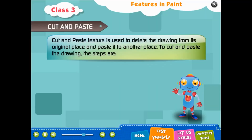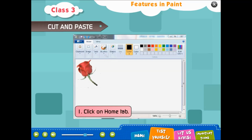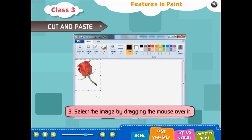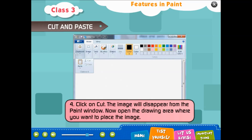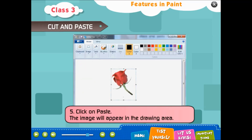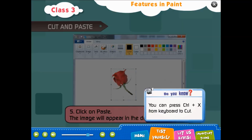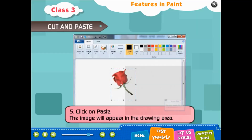Cut and Paste: this feature is used to delete the drawing from its original place and paste it to another place. Steps: 1. Click on Home tab. 2. Click on Select. 3. Select the image by dragging the mouse over it. 4. Click on Cut — the image will disappear from the Paint window. 5. Open the drawing area where you want to place the image. 6. Click on Paste — the image will appear in the drawing area. You can press Ctrl + X from the keyboard to cut.